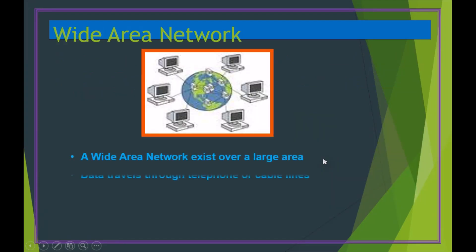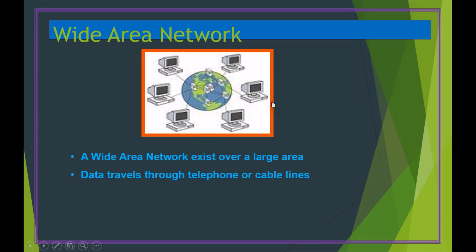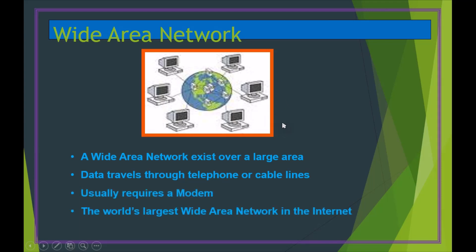WAN stands for Wide Area Network. If a company has locations in two cities — say Delhi and Mumbai — and they need to communicate, they need a WAN connection, which can be an internet connection or a leased line connection. To summarize: LAN is within a floor, building, or room; WAN is for connecting two different locations, organizations, or countries.